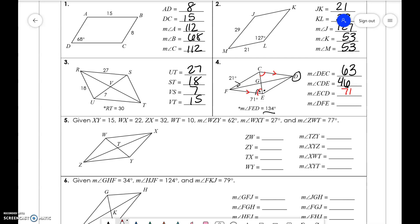And lastly, D, F, E. So we know that D and F are the same. And if this is all 46, 46 minus 21 gets you 25. So let's fill this in. This is 15, 22. So let's do the sides first. Z, W is 15. Z, Y is 22. T, X is 32 divided by 2, which is 16. And W, Y is 20 because we did 10 times 2.